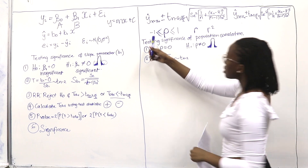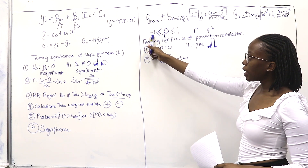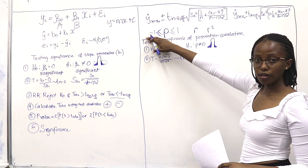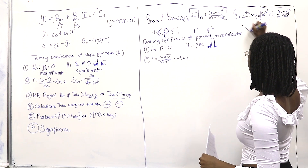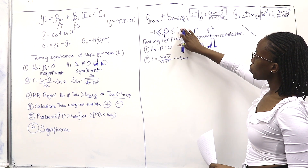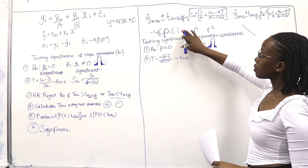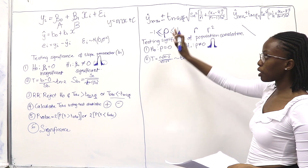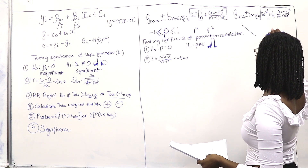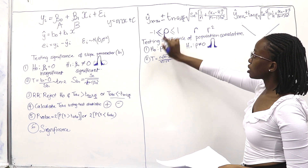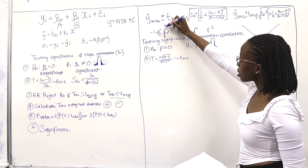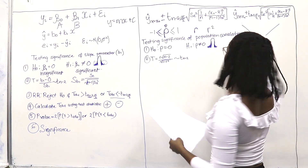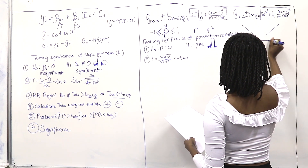The closer rho or r is to 1, it means it's a strong positive linear relationship. If it's closer to 0, it would mean there is not a strong linear relationship — it would suggest something nonlinear. So we need to test how significant the correlation is.